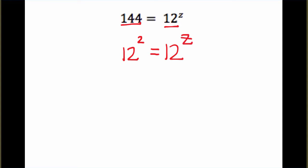And so we get 12 to the second equals 12 to the z. And what happens is when the bases are the same, they can cancel each other out. And we are just left with the exponents, and so z will equal 2.